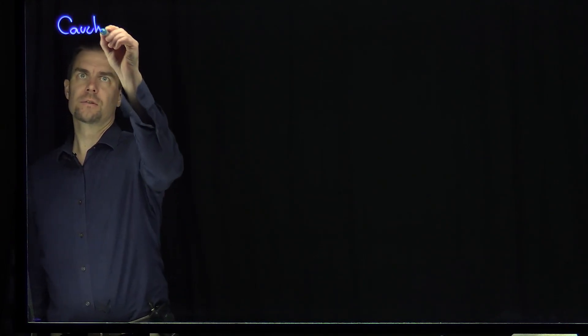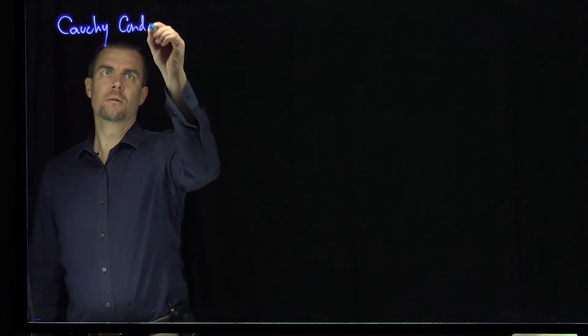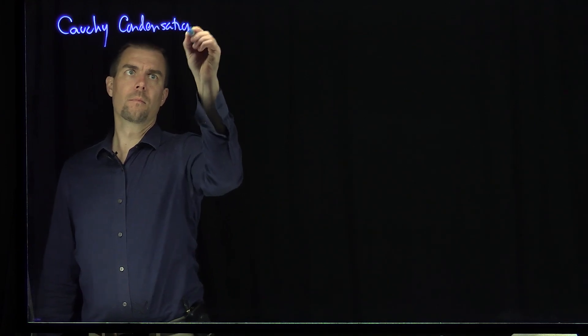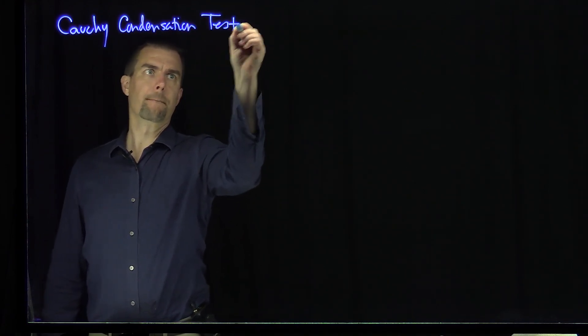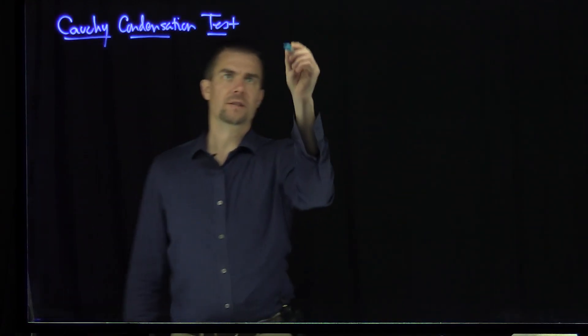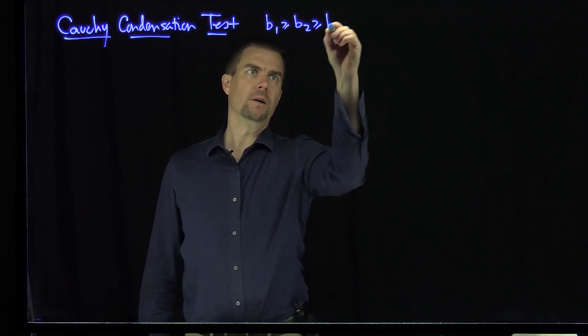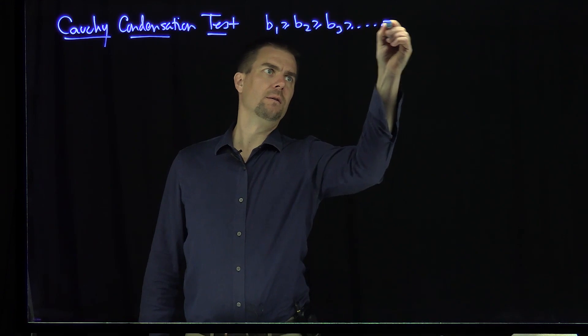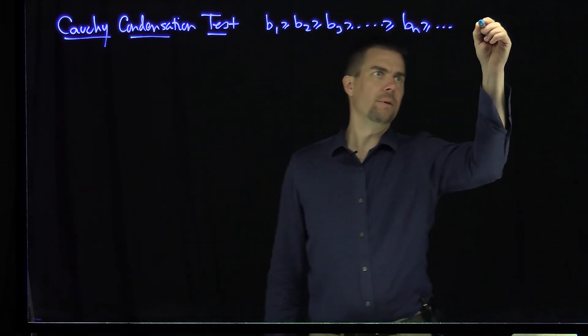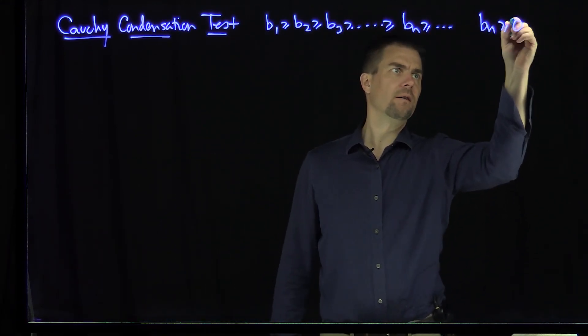The Cauchy condensation test asserts the following. If you have a sequence B1 bigger than B2 bigger than B3 and so on bigger than Bn, and the Bn are non-negative, then the sum from n equals 1 to infinity of Bn converges